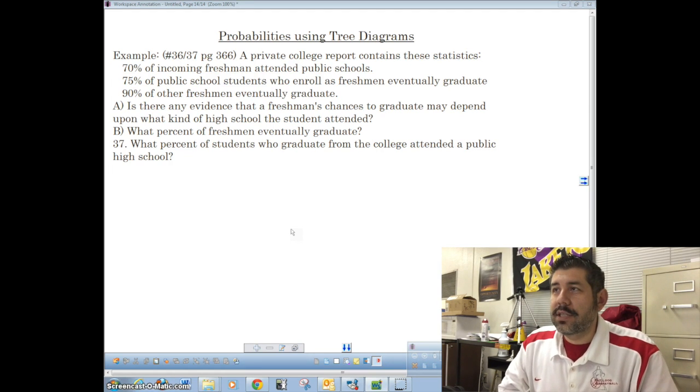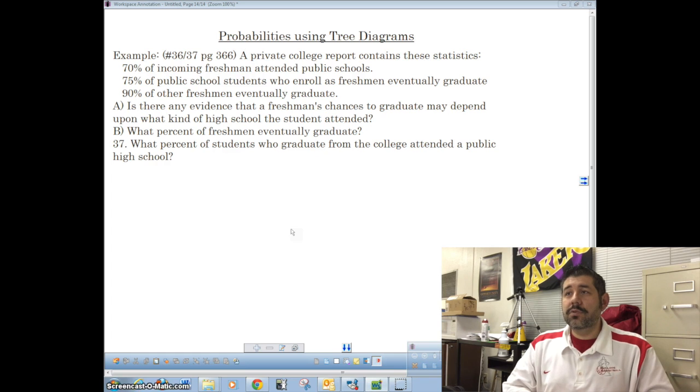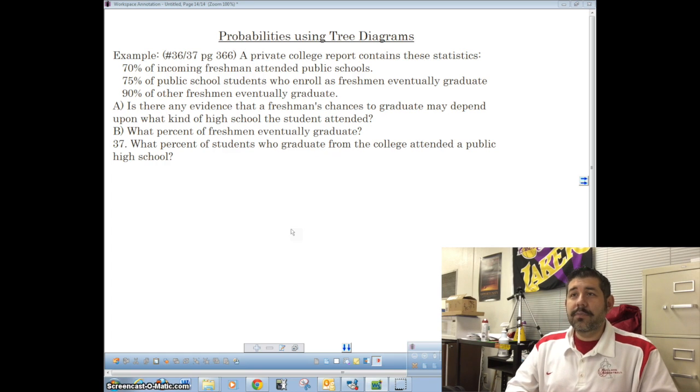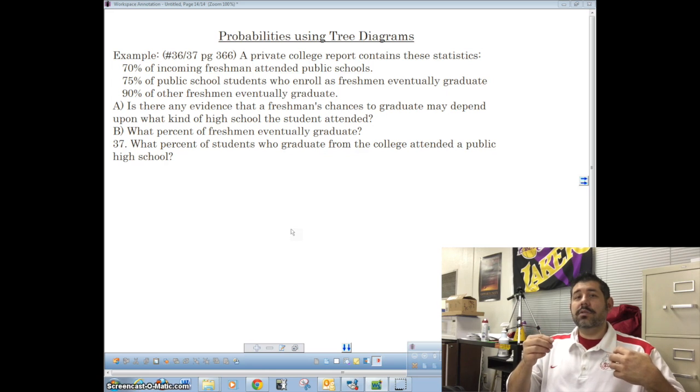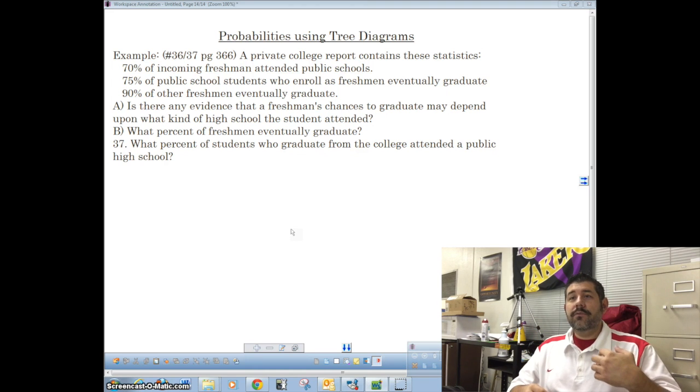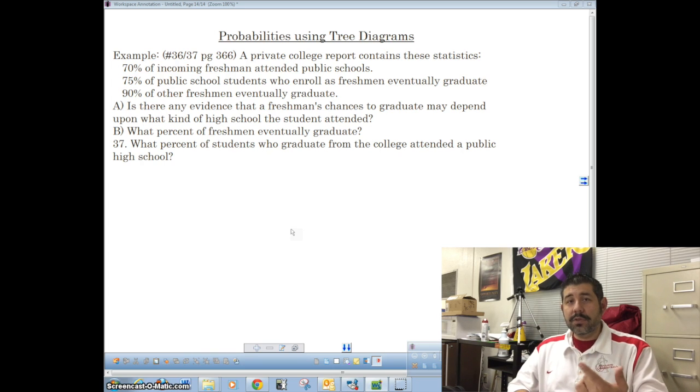A private college report contains these statistics: 70% of incoming freshmen attended public schools, 75% of public school students who enroll as freshmen eventually graduate, 90% of other freshmen eventually graduate. So think of it this way, 75% of public school students who enroll as freshmen eventually graduate. So in order for us to know that probability, we have to know that those students came in as freshmen public school students.